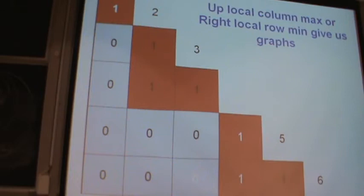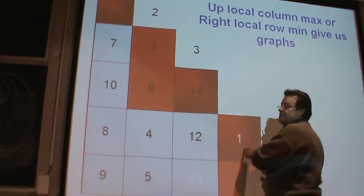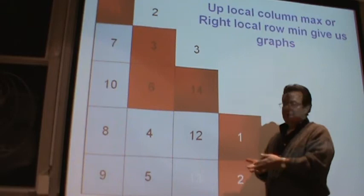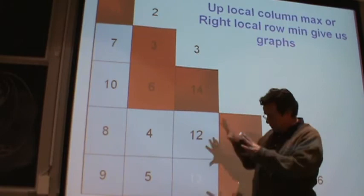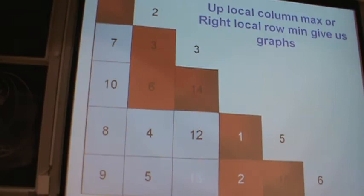There is a duality here. You can also look at any entry and ask if it is a minimum of everything to the right. These two things are dual. I call this the local max statistic of a balanced tableau: am I bigger than everything above? Yes — I get a one. No — I get a zero. That's the graph. Is it clear how the graph comes out?